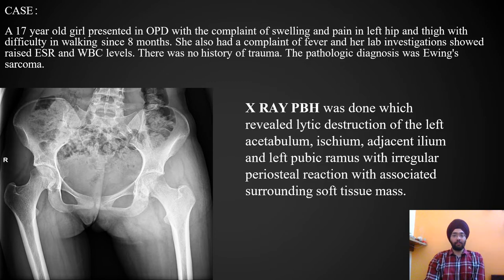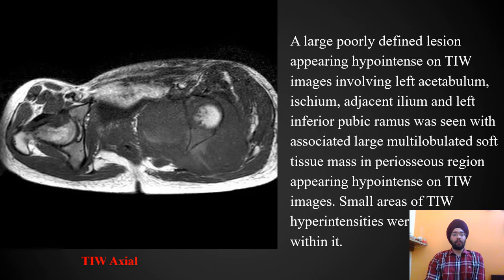On X-ray of bilateral hip joints, a lytic lesion is seen in the left acetabulum, ischium, adjacent ileum, and left pubic region with irregular periosteal reaction and associated soft tissue mass. On T1-weighted axial images, a large poorly defined lesion appearing hypointense on T1 involving the left acetabulum, ischium, adjacent ileum, and left inferior pubic ramus is seen, with associated multi-lobulated soft tissue mass. Small areas of T1 hyperintensity were seen within it.